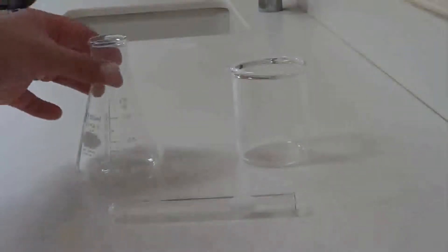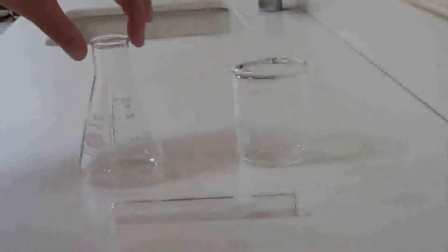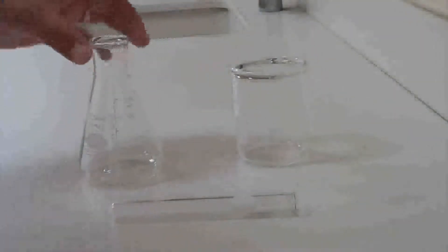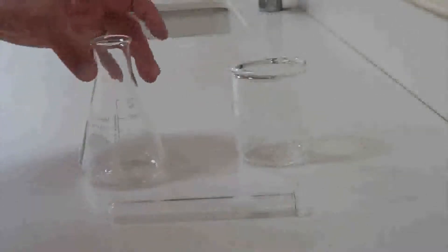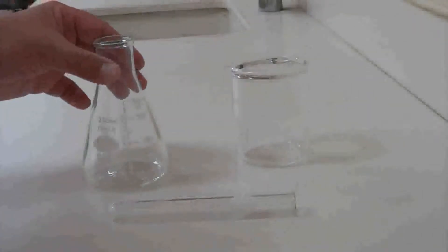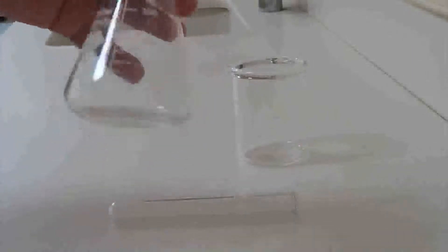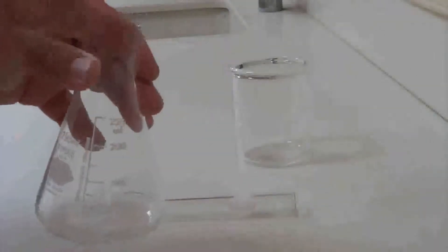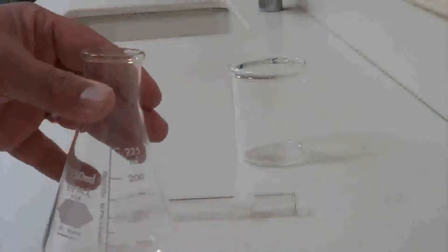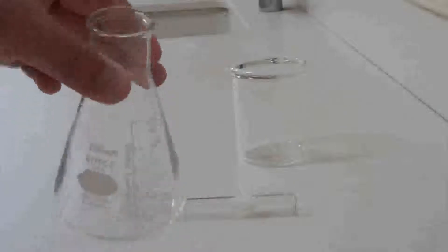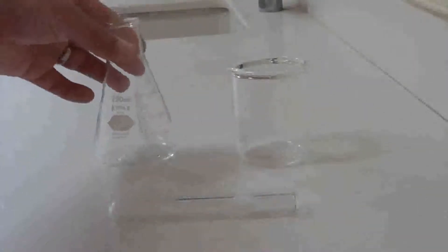Let's start with this one called an Erlenmeyer flask. You can see it has this very distinctive shape where it starts off almost like a cylinder and spreads out along the bottom. This is used any time you need to mix or stir a liquid. Notice how it's very easy to grab the top and swirl it. With the very small top, it's not going to spill out as easily. So this is primarily used for mixing things.